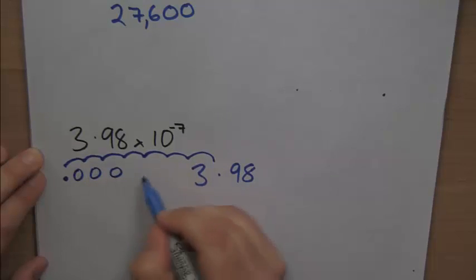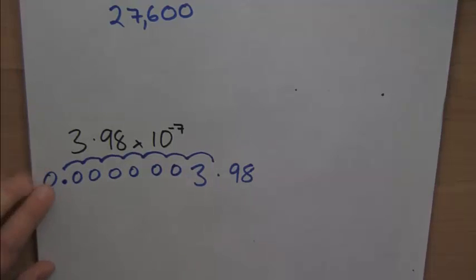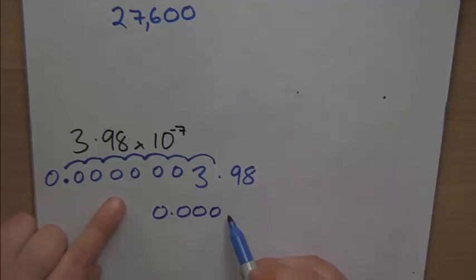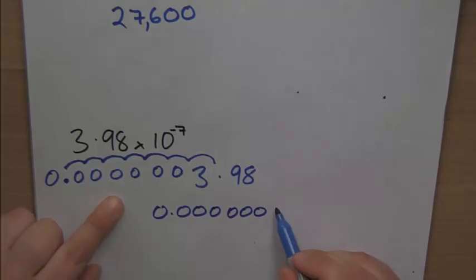So 1, 2, 3, 4, 5, 6 zeros. Now, I don't see numbers normally like this, so I'm going to put a number 0 on the front, so it's 0 point something. So the number that we've got here is 0.00000398.